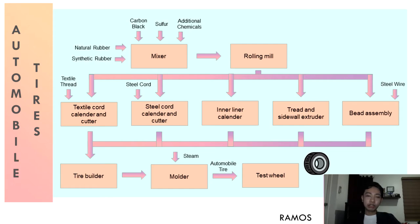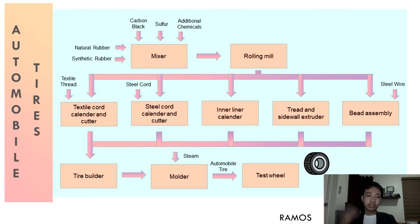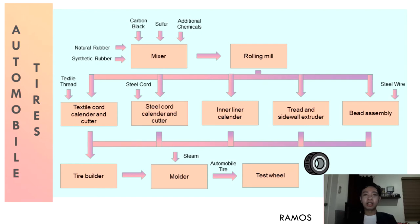The thick sheets of rubber are then sent to various machines to make the different parts of the tire, such as the textile cord, steel cord, inner liner, tread, sidewall, and bead. The calendar machine coats the rubber into the textile and steel cord. The extruder forces the rubber through a die to produce a discharge sheet. All the parts are then sent into a tire building machine that assembles the tires.